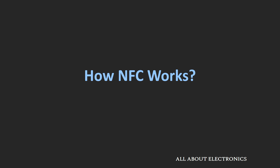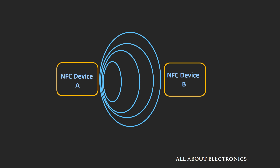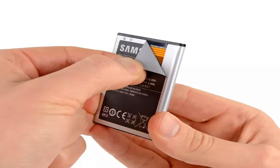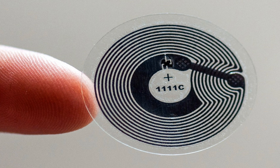Now let's understand how NFC works and how NFC-enabled devices communicate with each other. These NFC-enabled devices communicate using radio waves, which are generated using an antenna. In the case of a smartphone, the antenna is fitted on the battery, or sometimes on the back cover. In the case of an NFC tag, if you tear it down, you will find the antenna pattern inside. Using these antennas, the devices are able to communicate with each other.